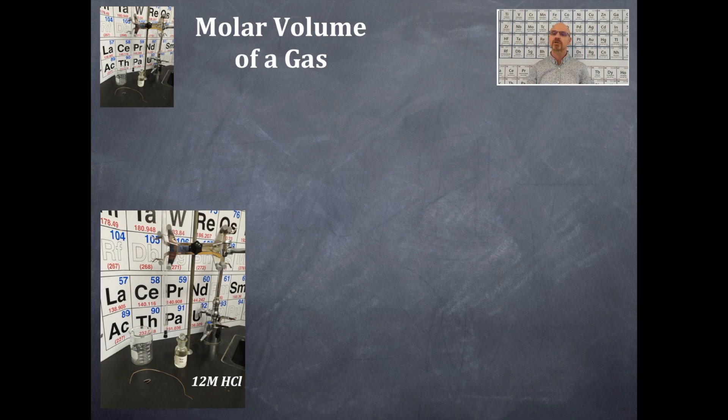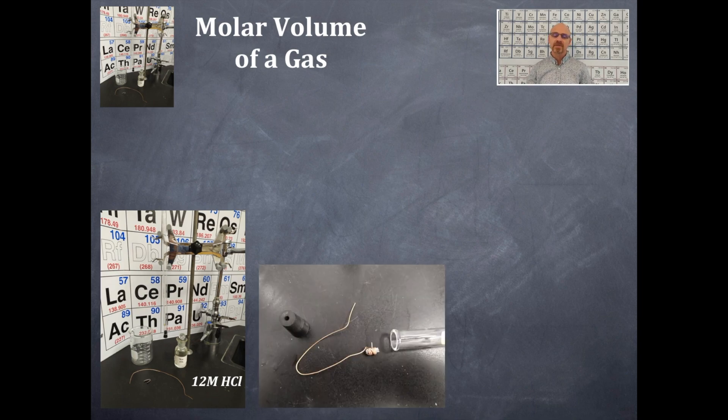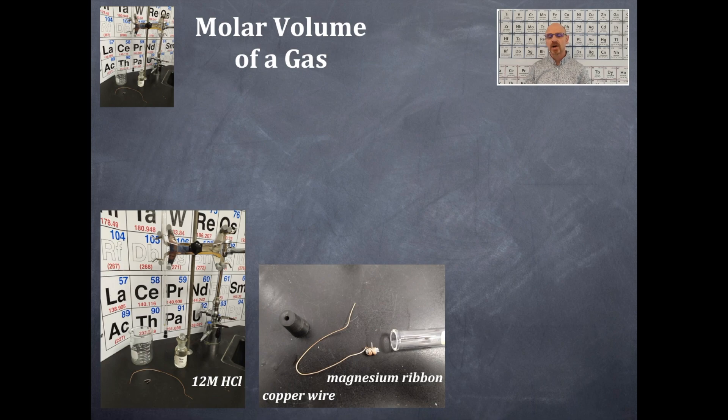One of the solutions here is 12 molar hydrochloric acid, which is concentrated hydrochloric acid. So a little zoom in on some of the setup: the gas measuring tube is on the right-hand side here. Then I have a piece of copper wire. And inside that copper wire is a piece of magnesium ribbon. And that magnesium ribbon is folded and weighed, its mass taken, and then the copper wire is wrapped around that magnesium ribbon. And then there is a rubber stopper with a hole in it.